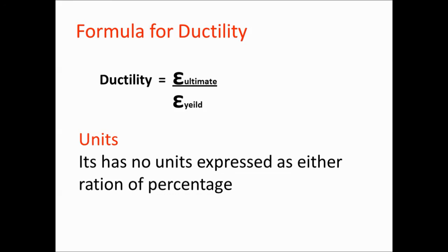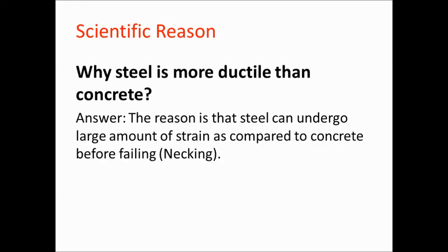Ductility has no units. It is expressed as a ratio or percentage. Why is steel more ductile than concrete? The answer is that steel can undergo large amounts of strain as compared to concrete before failing or necking.